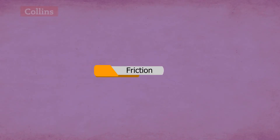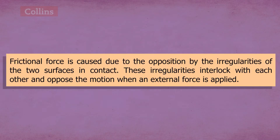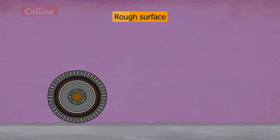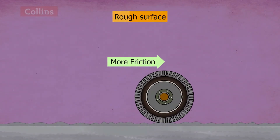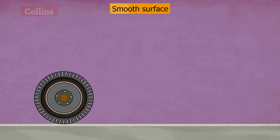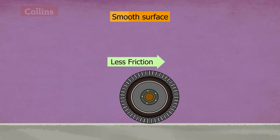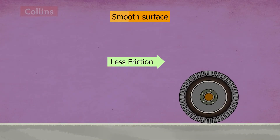Friction. Frictional force is caused due to the opposition by the irregularities of the two surfaces in contact. These irregularities interlock with each other and oppose the motion when an external force is applied. If the surface of contact is rough, friction is more, and if the surface of contact is smooth, then friction is less.